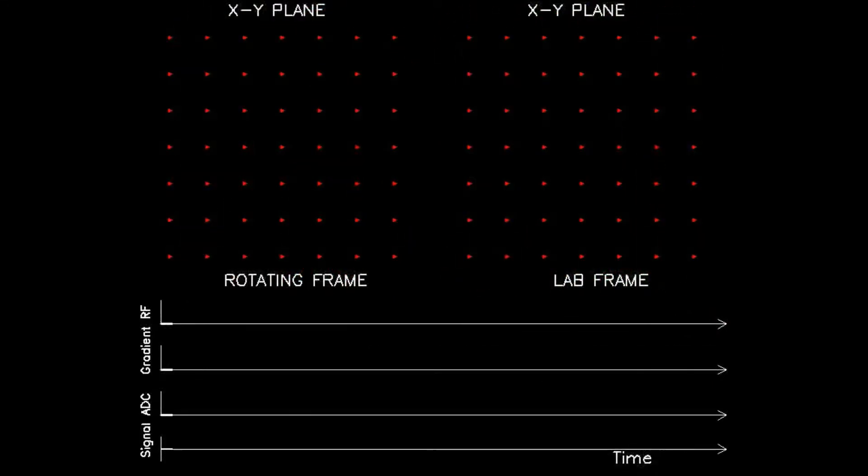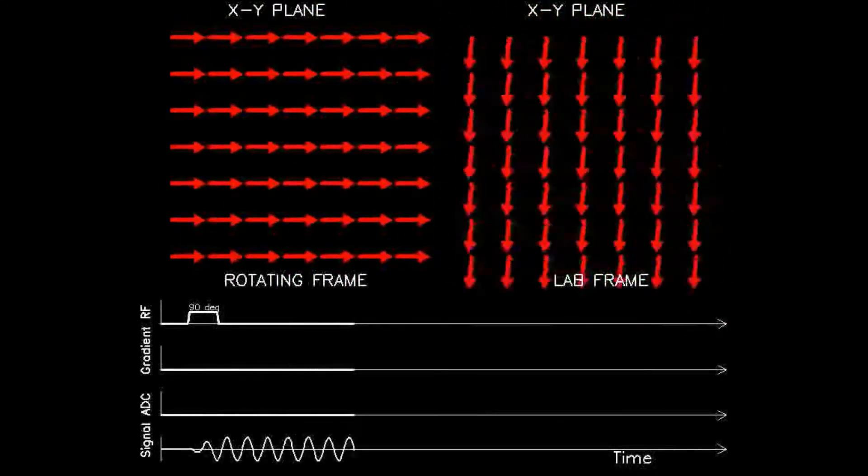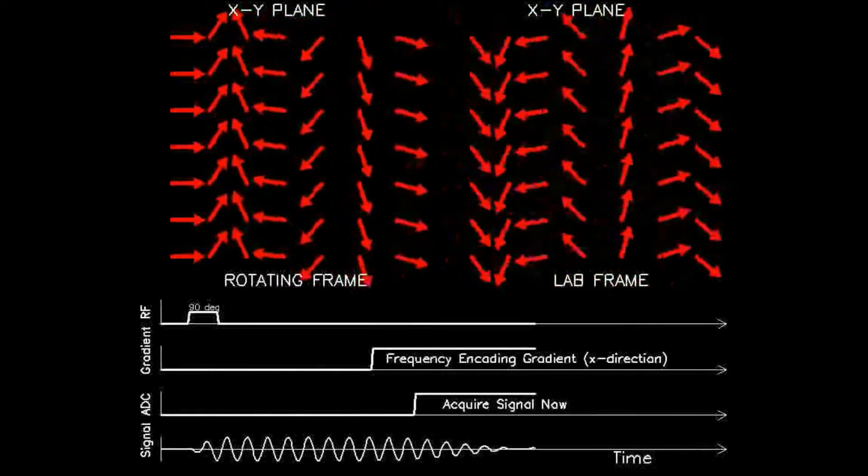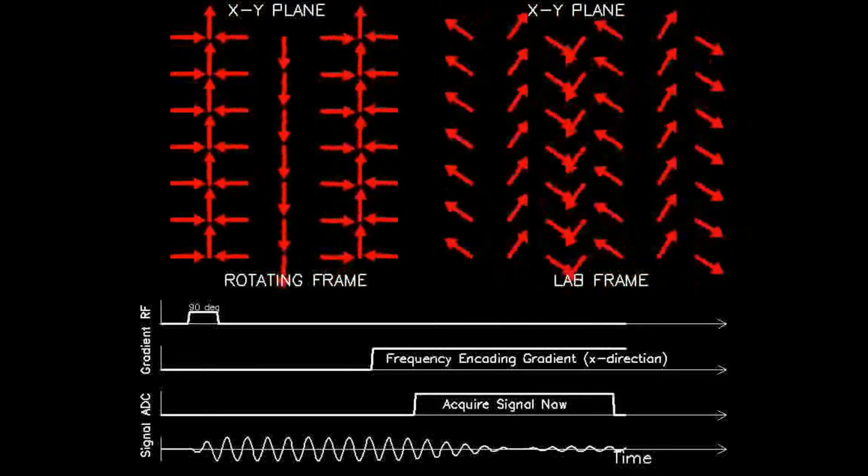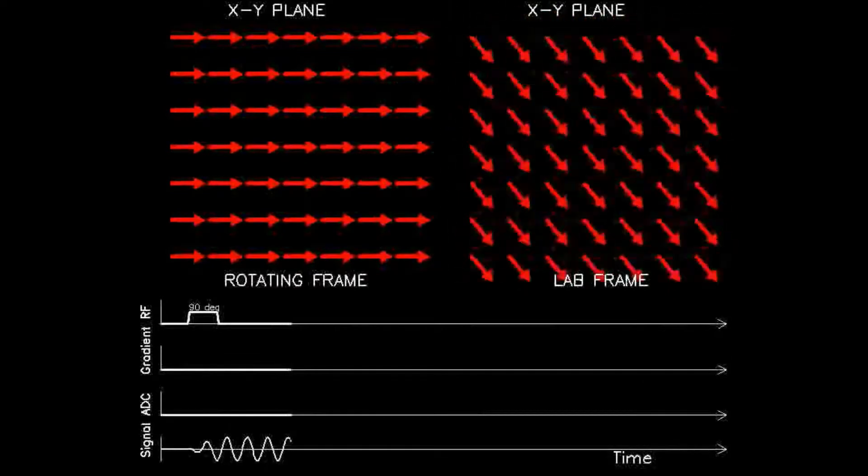The amount of adjusted frequency change is a known quantity with two important features. One, all spins along a given column have the same frequency. And two, each column has a different and unique frequency, the variation of which depends upon the magnitude and duration of the impressed gradient.